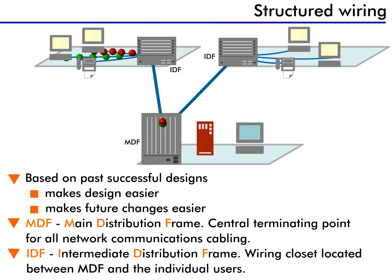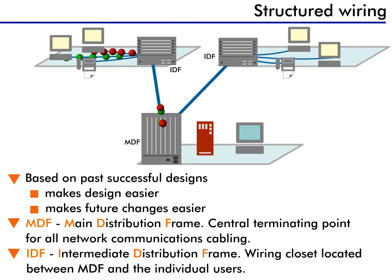What I've just described is structured wiring — the concept of designing your network with a plan. This plan requires building the bandwidth infrastructure so small pipes flow into bigger pipes, which may flow into still bigger pipes. Now that we've learned about the wiring infrastructure, what about the equipment in the wiring closet?